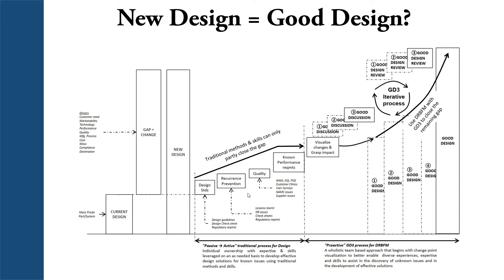Traditional methods cover part of the problem, but in our journey from a current design to a good design by implementing new changes, we need to follow the DRBFM process. To reach the perfect stage of the new design, you follow the GD cube iterative process: you visualize the parts, sub-parts, assemblies, and sub-assemblies, then study the impact of the change on neighboring parts, sub-assemblies, and assemblies — and on neighboring systems if your product is part of a bigger system. This is achieved through productive, goal-oriented discussions.